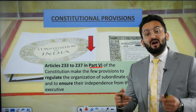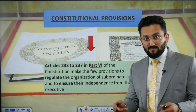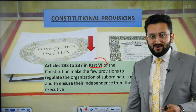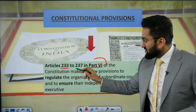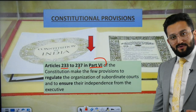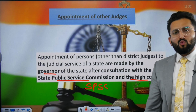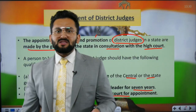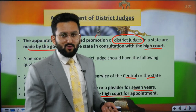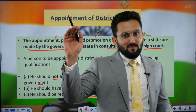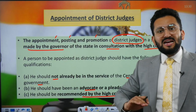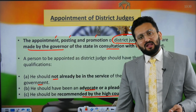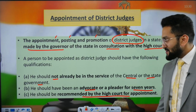Subordinate courts are mentioned in Part 6 of the Indian Constitution, Articles 233 to 237. In the previous sessions, I told you that we have an integrated judiciary — Supreme Court, High Court, then subordinate courts at the district level, and below that also we have certain courts. So we call them subordinate courts.